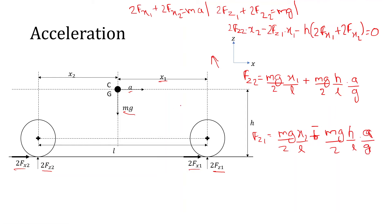In both equations, the first term is the static part and the second term is the dynamic part. The static part, as the name suggests, remains the same whether the car is moving or not. The dynamic part arises because of the acceleration of the car.